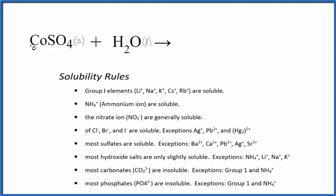We're looking for either the cobalt(II) Co2+ or the sulfate ion. Going down the rules, it says most sulfates are soluble in water, with some exceptions. Cobalt is not in our list of exceptions, so this is going to be soluble in water. It's going to break apart — dissociate — into its ions.